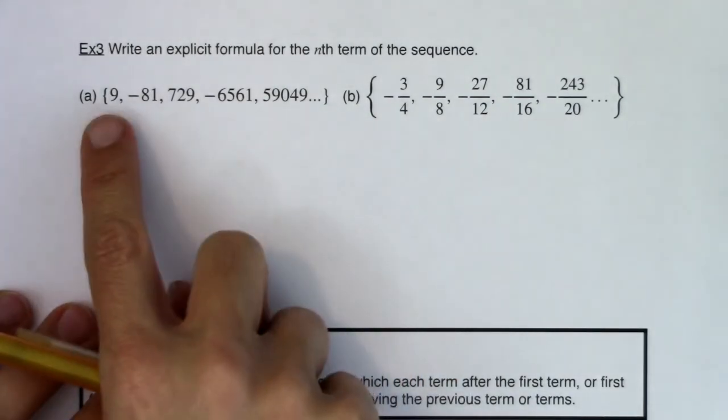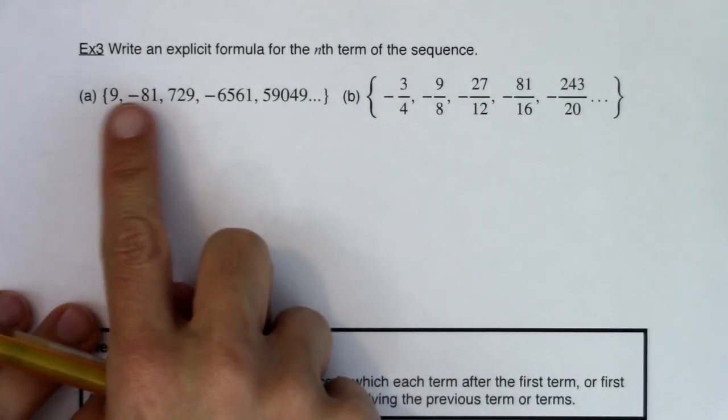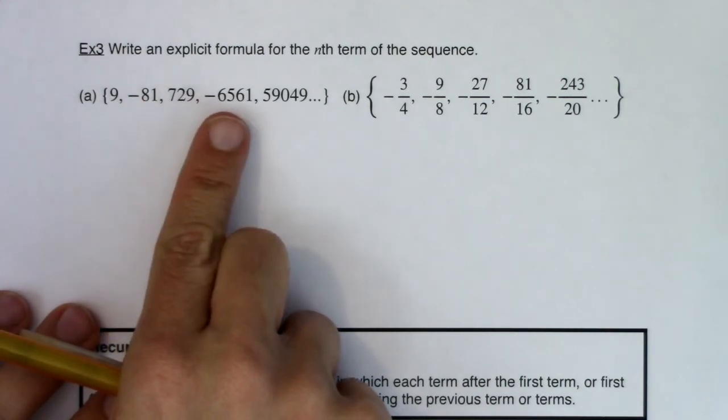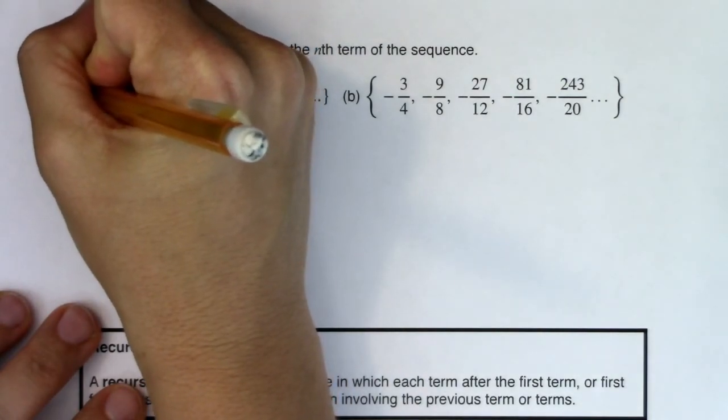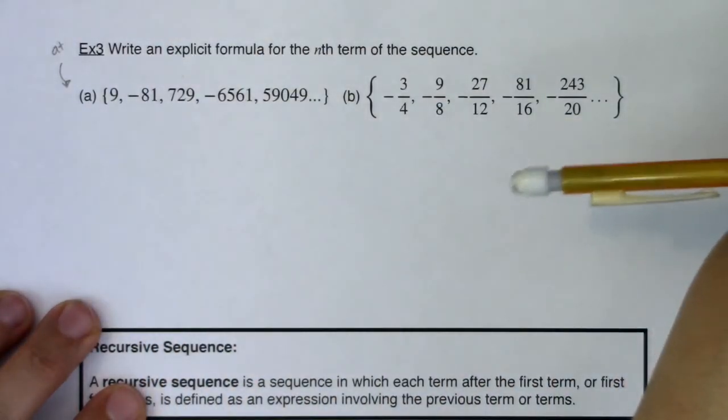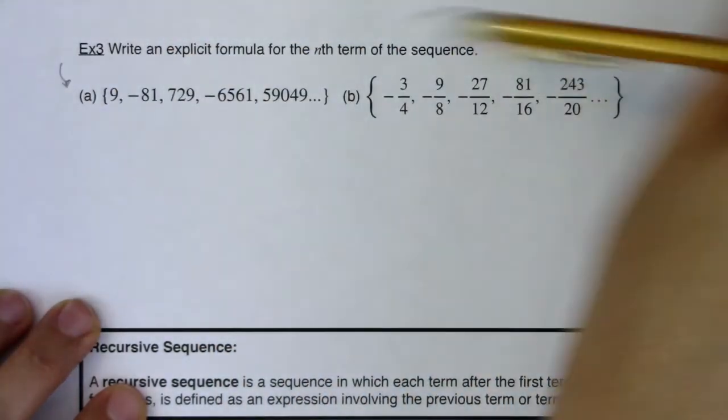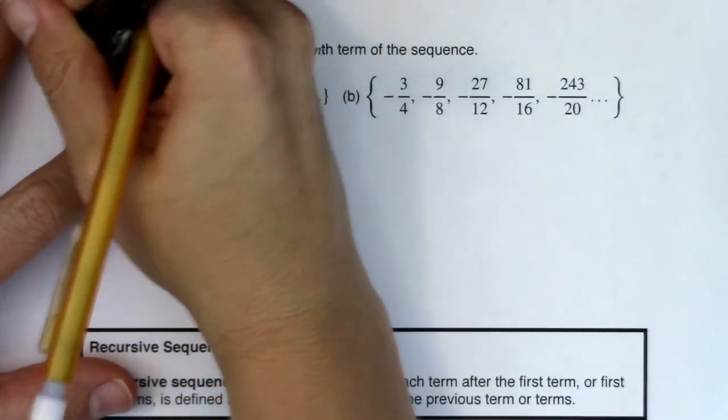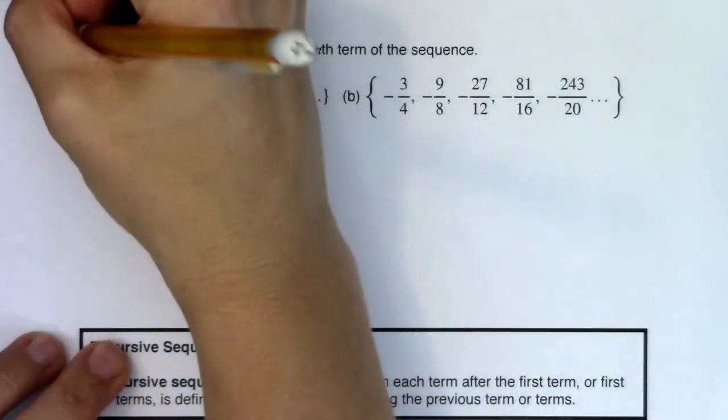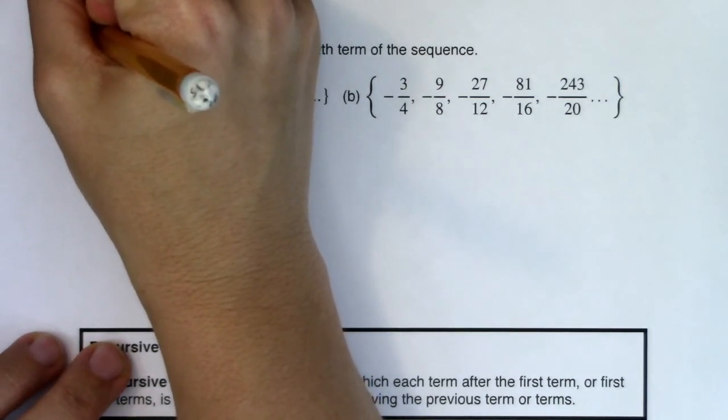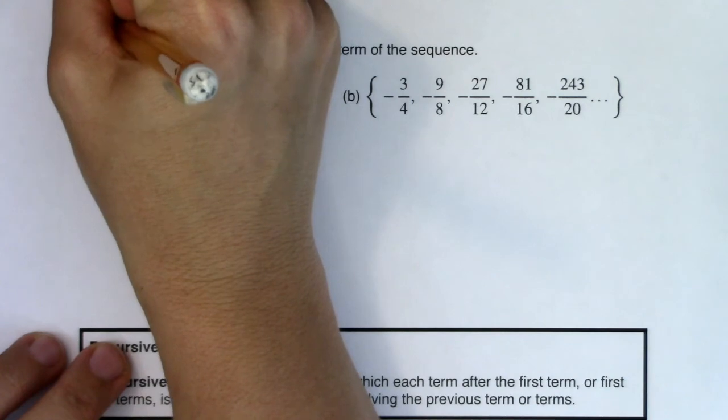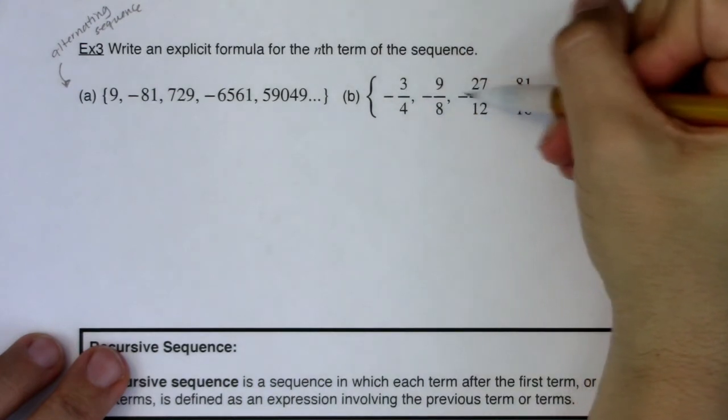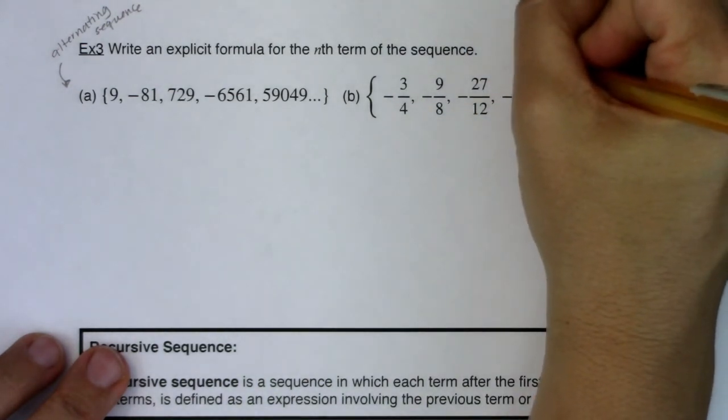Things I would point out: I can see first of all there's some kind of alternating sequence here because the first term is positive, second term is negative, positive, negative. So I have an alternating sequence. And over here on part B, I take note that each time my term is negative, so this is not an alternating sequence.